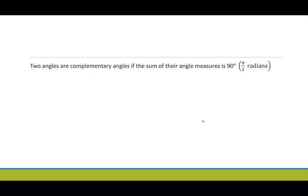Two angles are complementary if the sum of their angle measure is 90 degrees or pi over 2 radians. And one important thing to note here is that when we say two angles, the measures of these angles must be positive. So the angle measures must be positive, which indicates to us that these angles must both be acute.